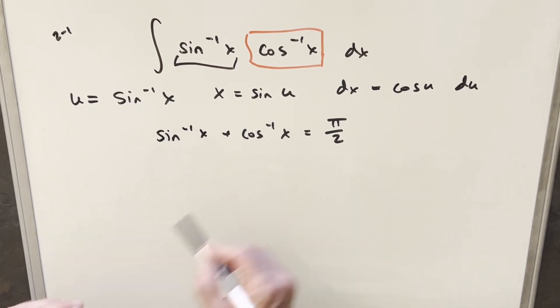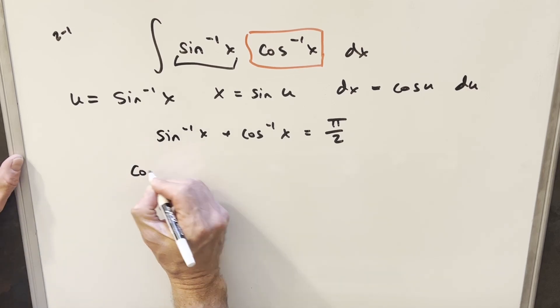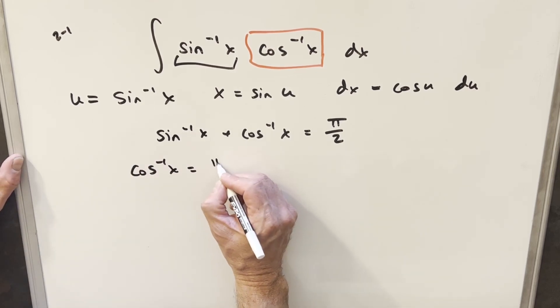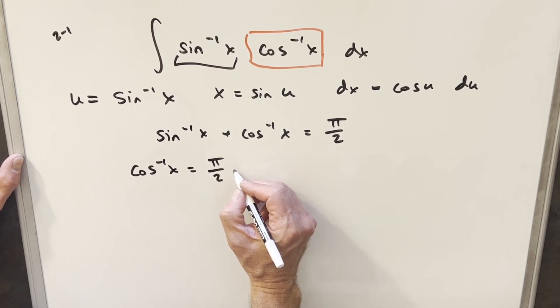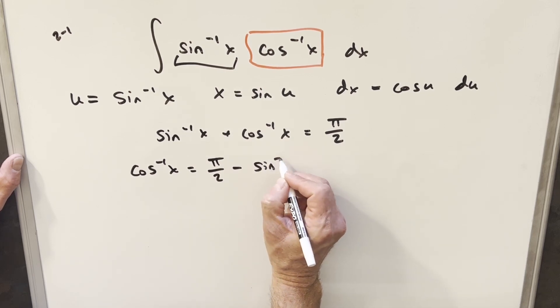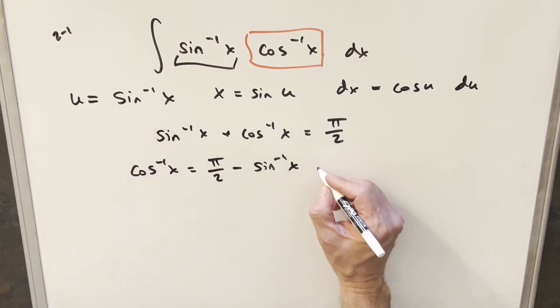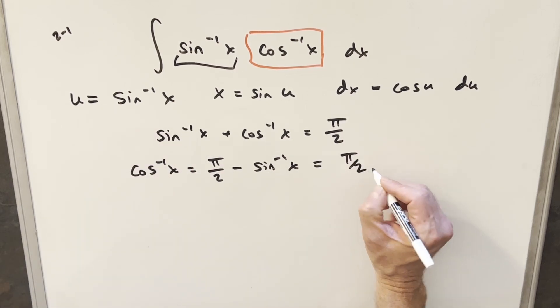What we can do to use this is just rearrange it and solve for the arccosine. So just subtracting the arcsine on both sides, we're going to put π over 2 minus arcsine here. But we have a value for arcsine which is just u. So we can write this as π over 2 minus u.